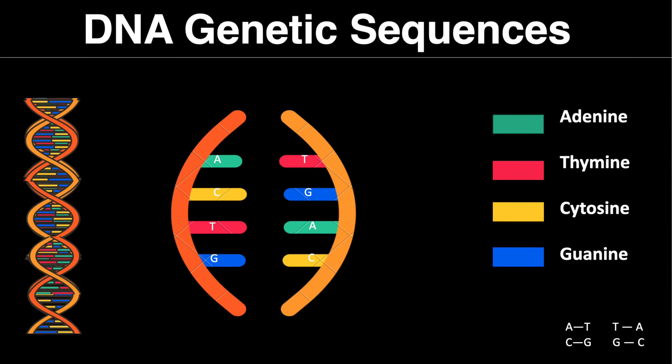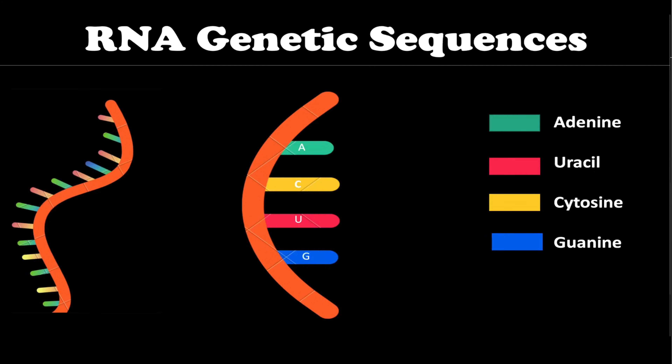In DNA, there's adenine, thymine, cytosine, and guanine. DNA is a double helix structure, meaning there are nucleotides — adenine, thymine, cytosine — on each side of the strands. These strands come together, bond, and form pairs: adenine pairs with thymine, and cytosine pairs with guanine. The nucleotides involved in RNA are adenine, uracil, cytosine, and guanine.